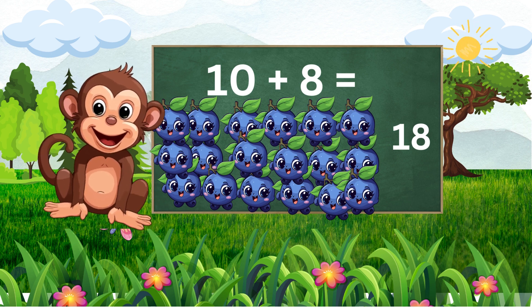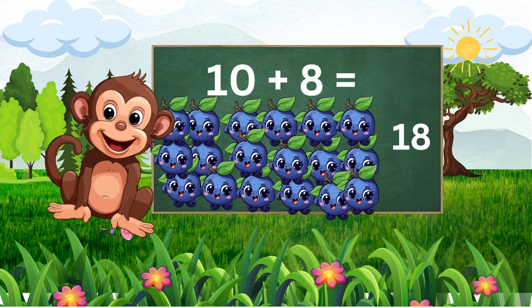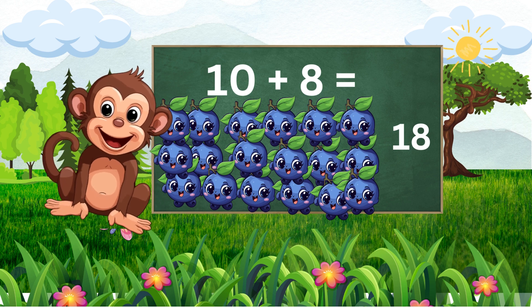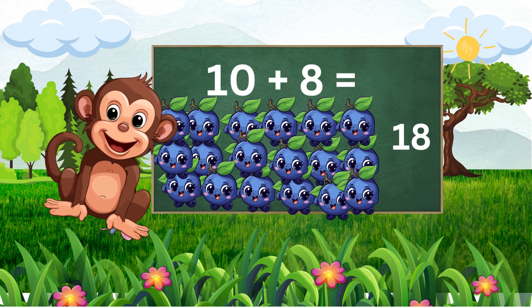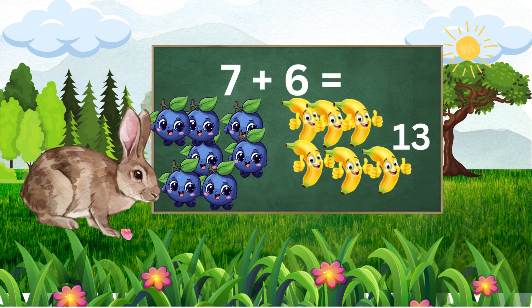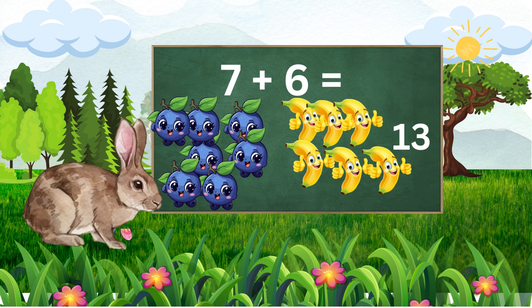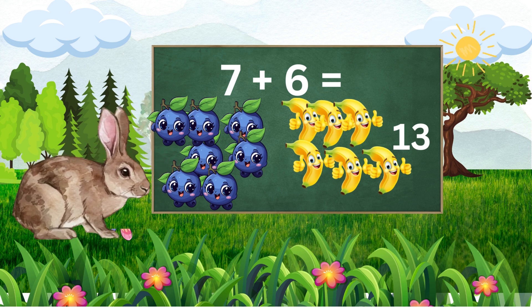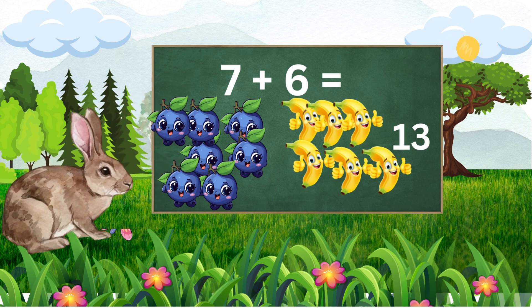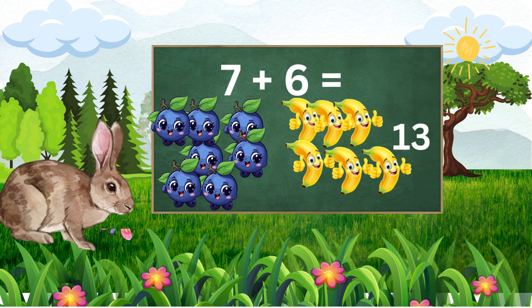Now let's make it a bit trickier. If we have seven blueberries and six bananas, how many fruit do we have in total? I got this — we have 13 fruits. Splendid. Seven blueberries and six bananas equals 13 fruits.